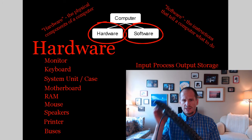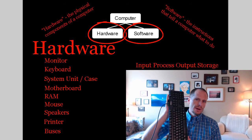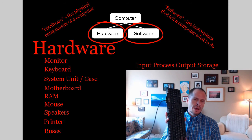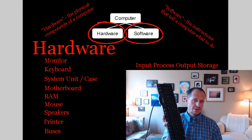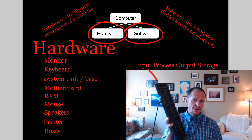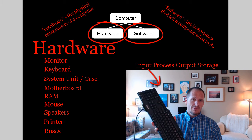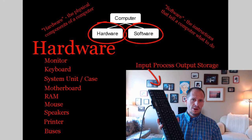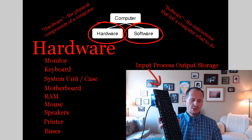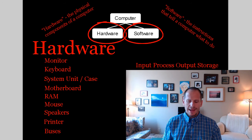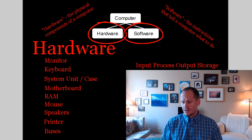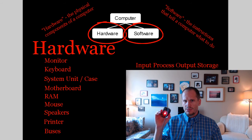So this device right here — which one do you think that would be? Would it be an input device, a processing device, an output device, or a storage device? Well, obviously this is an input device — it's a keyboard. It allows us to input information into the computer. Likewise, your mouse is an input device.